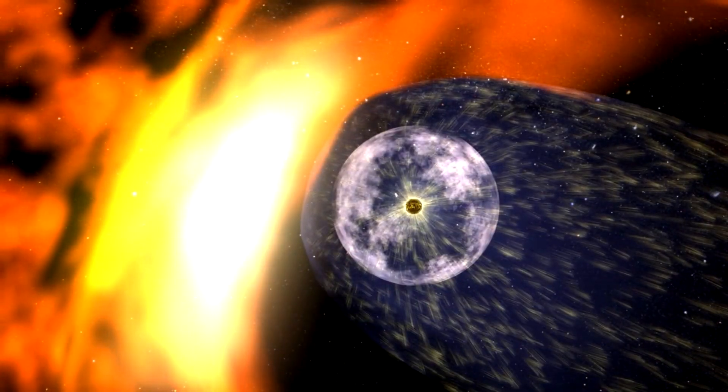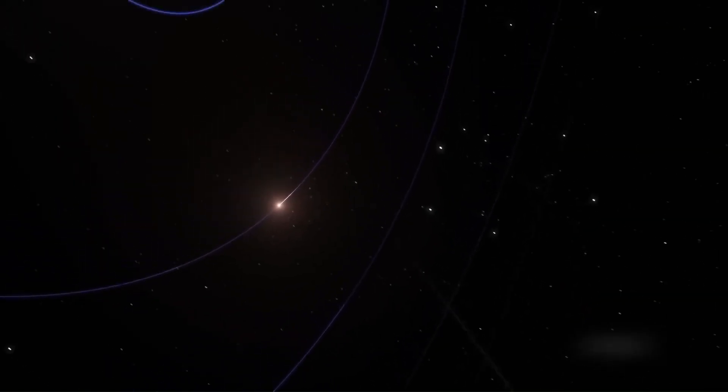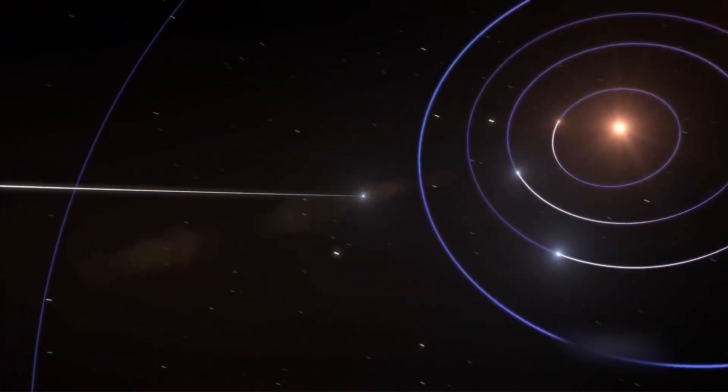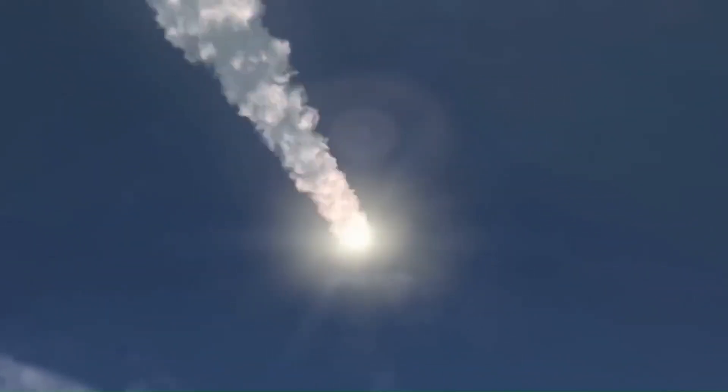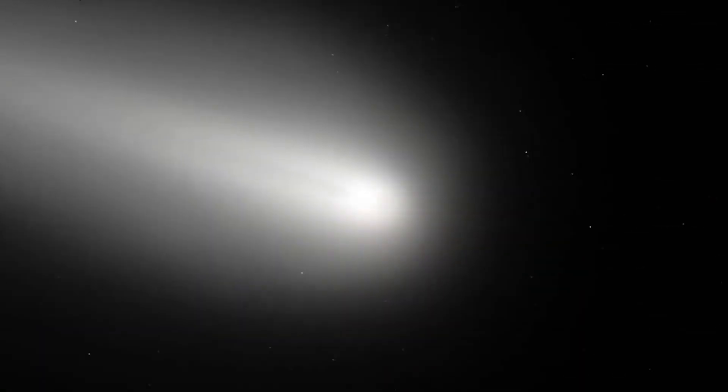However, the heliopause has recently suffered many terrifying changes, and it appears that something is attempting to enter our solar system from interstellar space. Today's video will discuss the alarming new threat found by the James Webb Telescope as it approaches our solar system.